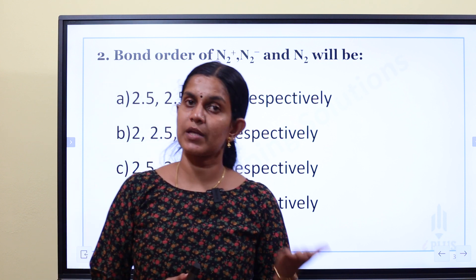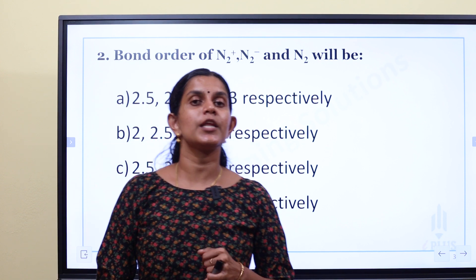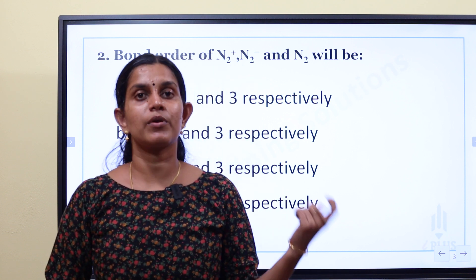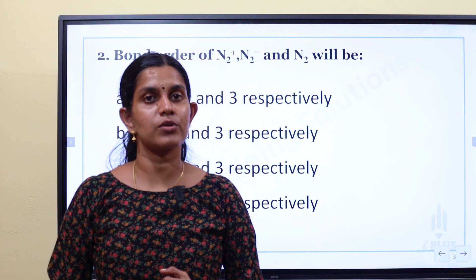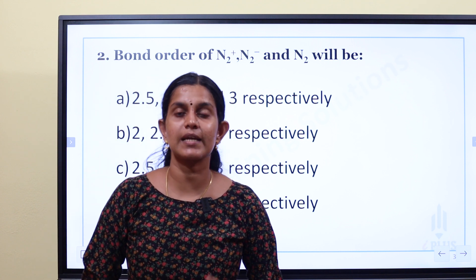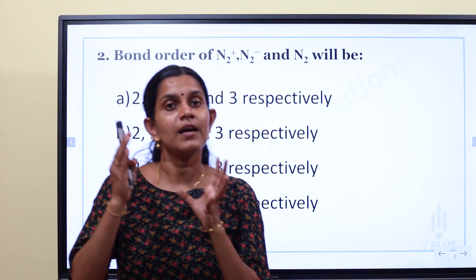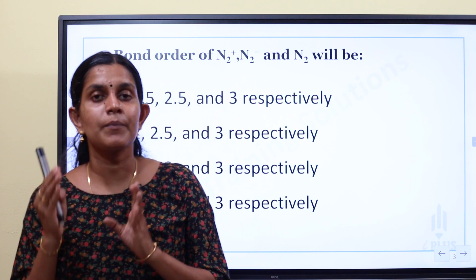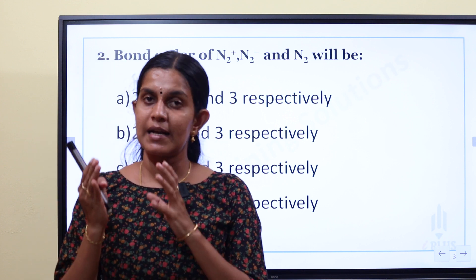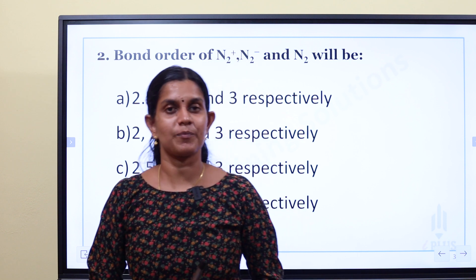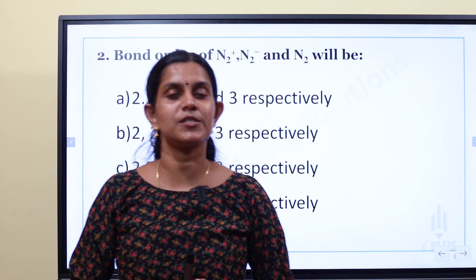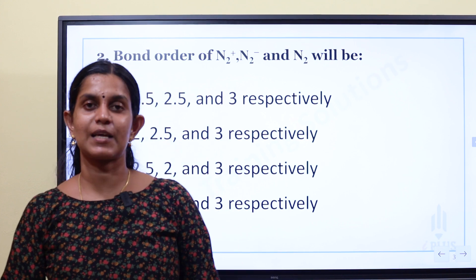There is also a reverse order in bond dissociation enthalpy compared to bond length. We also have magnetic properties based on unpaired electrons. If there is an unpaired electron, the molecule is paramagnetic. If all electrons are paired, it is diamagnetic. That's all. Thank you.